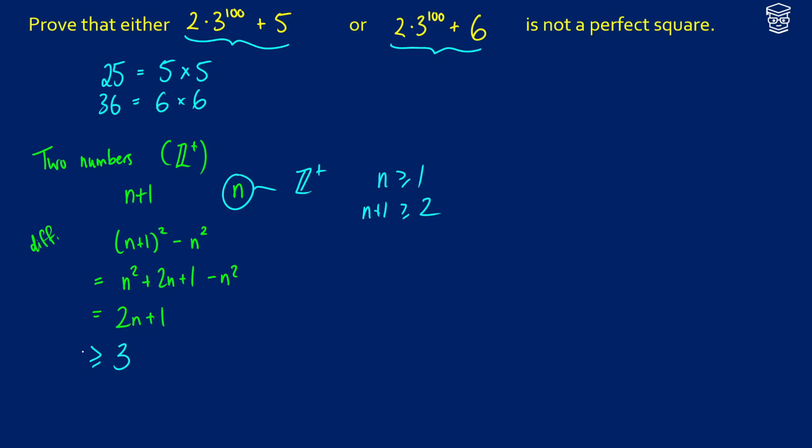So what this is telling us is that if we have two perfect squares, there's at least three distance between them.